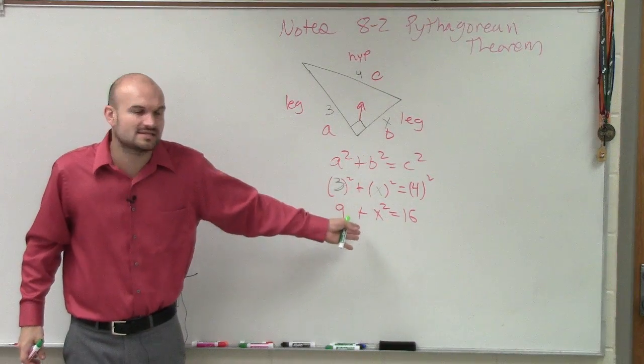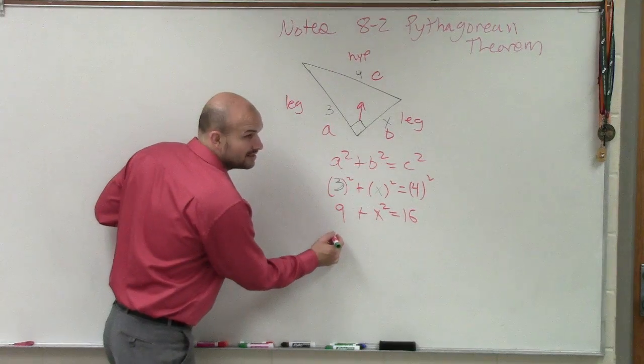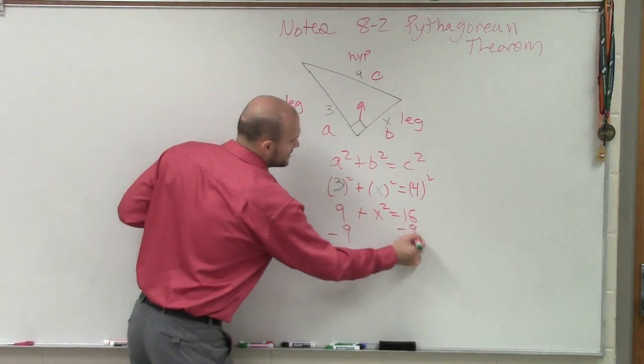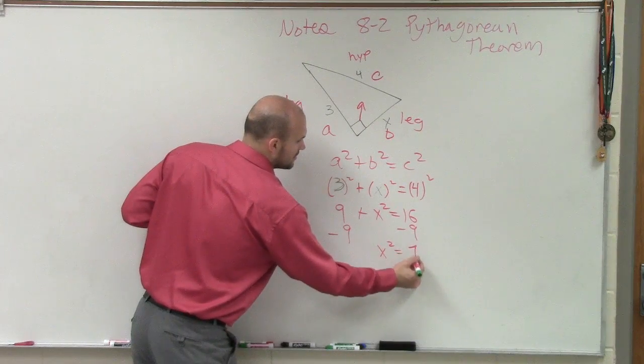Then I need to solve for x. So what's happening to my x? You need to first undo. You subtract. You subtract the 9. Very good. Subtract 9. So therefore, you have x squared equals 7.